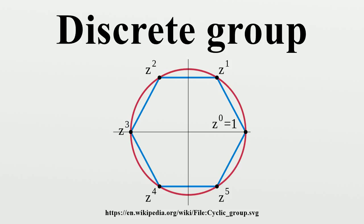Fuchsian groups are, by definition, discrete subgroups of the isometry group of the hyperbolic plane. A Fuchsian group that preserves orientation and acts on the upper half-plane model of the hyperbolic plane is a discrete subgroup of the Lie group PSL(2,R), the group of orientation-preserving isometries of the upper half-plane model of the hyperbolic plane. A Fuchsian group is sometimes considered as a special case of a Kleinian group, by embedding the hyperbolic plane isometrically into three-dimensional hyperbolic space and extending the group action on the plane to the whole space.